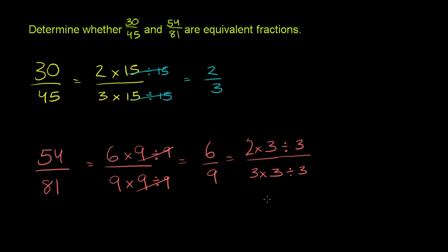So we're going to divide by 3. 3 divided by 3 is just 1, 3 divided by 3 is 1. And you're left with 2/3. So both of these fractions, when you simplify them, when you put them in simplified form, both end up being 2/3, so they are equivalent fractions.